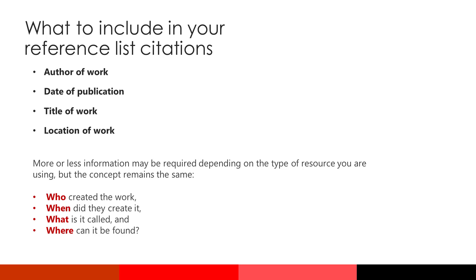There are four key types of information that need to be included in a reference list entry. You need to provide your readers with the author of the work you've cited, the date of publication of that work, the title of the work, and the location where that work can be found. I like to think of these four pieces of information as the four W's: who created the work, when was it created, what is it called, and where can it be found?